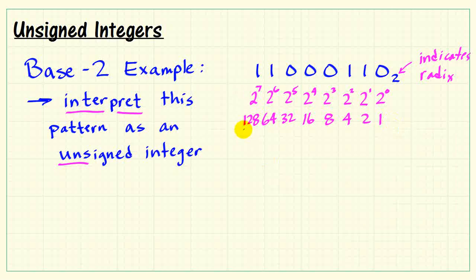1 multiplies the weight 128, 1 multiplies 64, 0 multiplying 32 means we discard that weight. We need weights 4 and 2, but not weight 1. Just as in the base-10 example, we add together these weights. If we express this unsigned integer in base-10, we get the value 198.